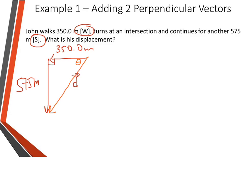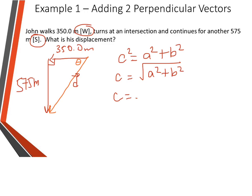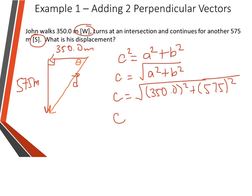So if we have right angles, we can then use our Pythagorean theorem. So we've got c² = a² + b². You're almost always finding the hypotenuse here, so you're not really going to have to rearrange that equation. And you should know that you're going to take the square root of the sum of the squares. So then we can put our information in. You can feel free to do that all in one step on your calculator. We want to round so that we have three significant digits, so we get 673 meters — that's our displacement.